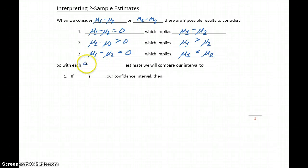So with each confidence interval, we'll be comparing our interval to zero. This makes two-sample intervals, in some cases, a little bit easier to interpret because we're always making that comparison to zero. And whether zero is in our interval or not in our interval will have different consequences.